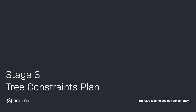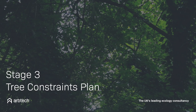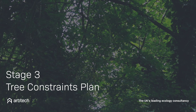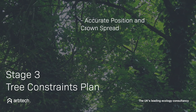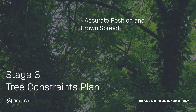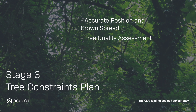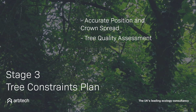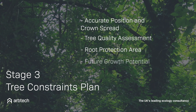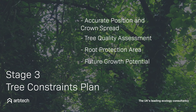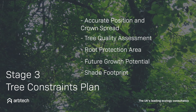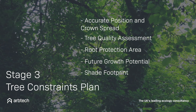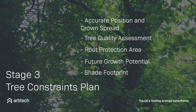Stage three is the Constraints Plan. This must show the following five things for each tree in the area: accurate position and crown spread, tree quality assessment, root protection area, future growth potential, ground spread and height, and the shade footprint throughout the day based on further growth potential.